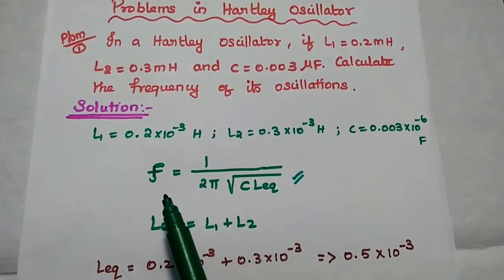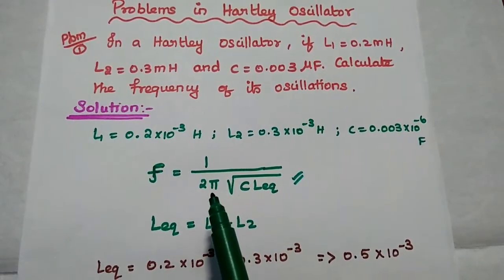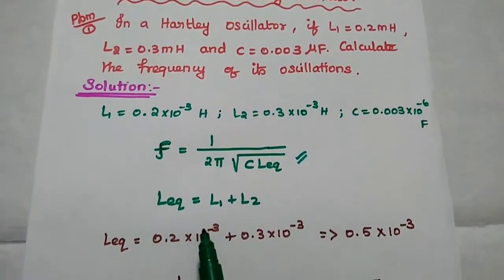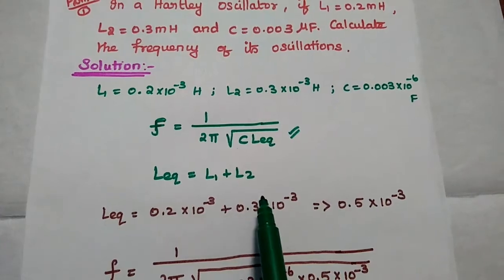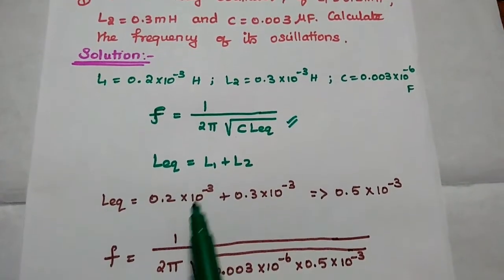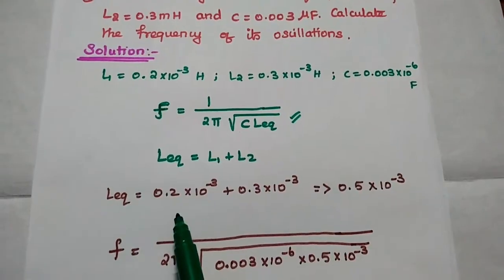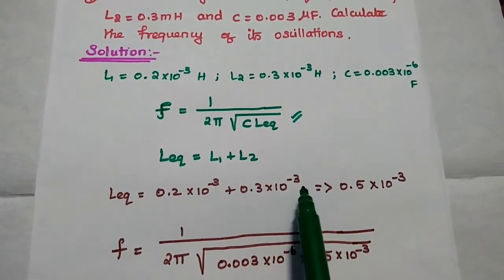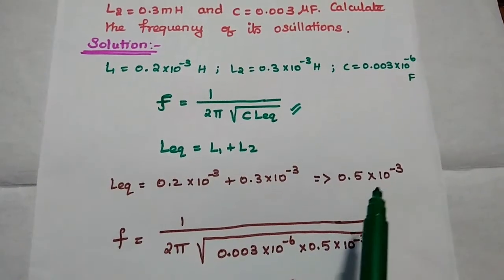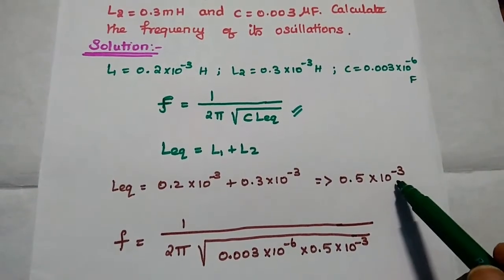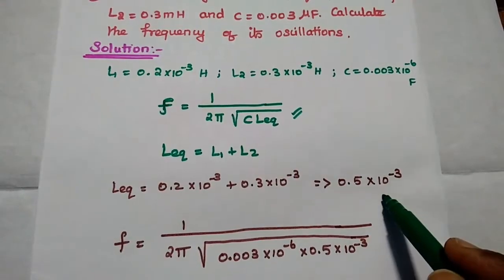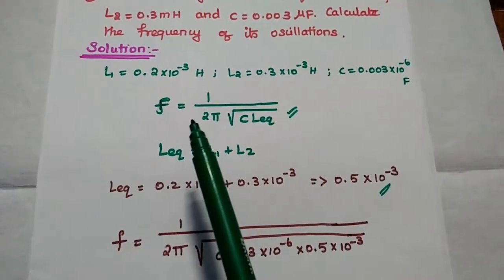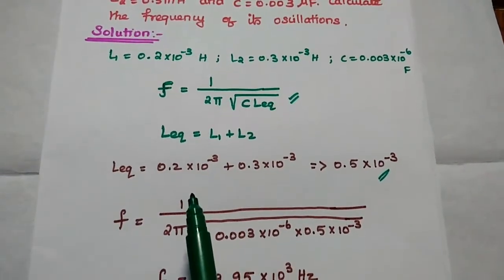The formula is F is equal to 1 divided by 2π times the square root of C into L_equivalent, where L_equivalent is equal to L1 plus L2. Substituting the values: 0.2 into 10 to the power minus 3 plus 0.3 into 10 to the power minus 3, that is equal to 0.5 into 10 to the power minus 3. We substitute this L_equivalent value and the capacitance value to get the frequency of oscillation.